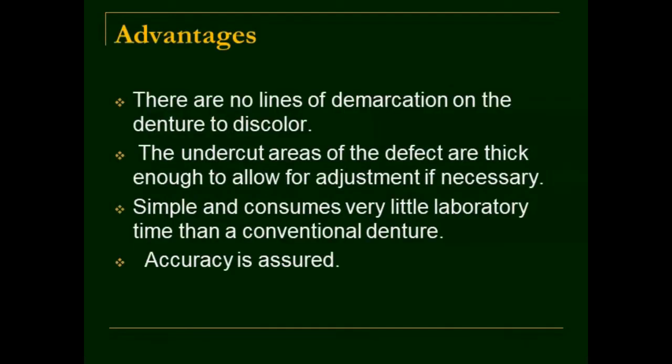The advantages of the one-piece hollow bulb obturator are: there are no lines of demarcation on the denture to discolor; the undercut areas of the defect are thick enough to allow for adjustment if necessary; it is a simple technique that consumes very little laboratory time compared to a conventional denture; and it is an accurate technique requiring only fabrication of an acrylic shim.